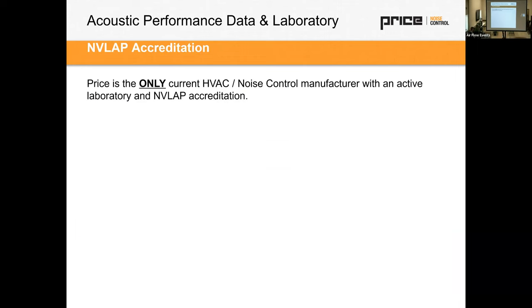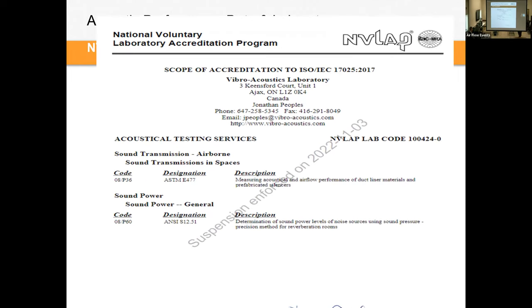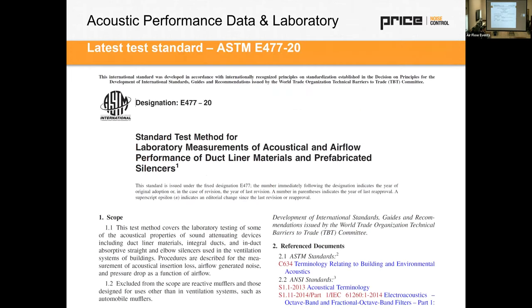Price is currently the only manufacturer of noise control products with NVLAP accreditation. Other manufacturers have historically held this accreditation but more recently discontinued it. Competitor Vibro Acoustics had accreditation that was suspended in 2022 when they moved locations and lost primary use of their testing lab.